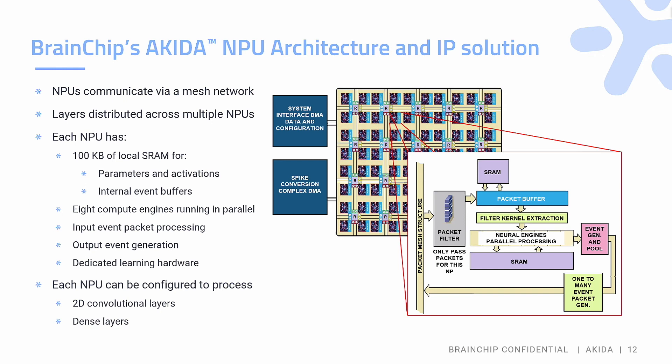Four of those NPUs become a node, so they can communicate at one layer, and at the higher level the nodes can communicate with each other. This is a scalable design — depending on the size of the network you want to run on an IP, you can license a four-node, eight-node, or 16-node configuration. The chip we have built today is a 20-node chip that I'll show you.